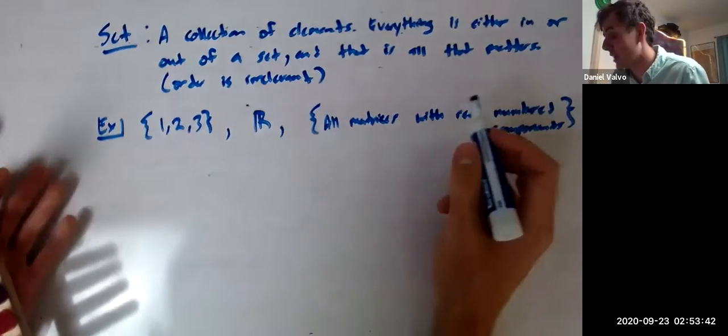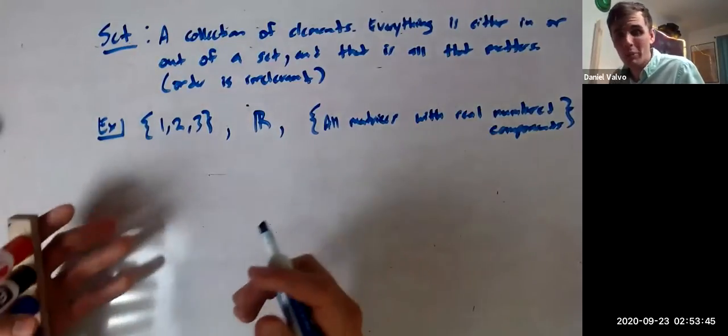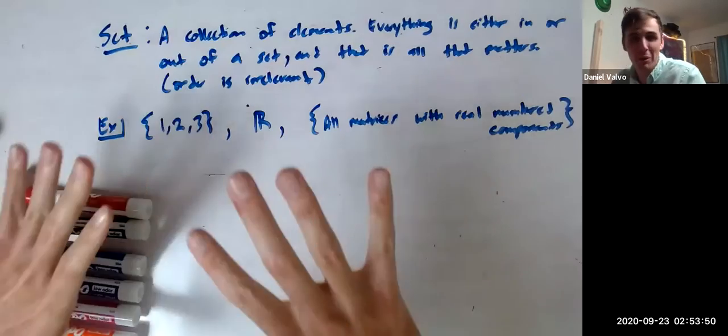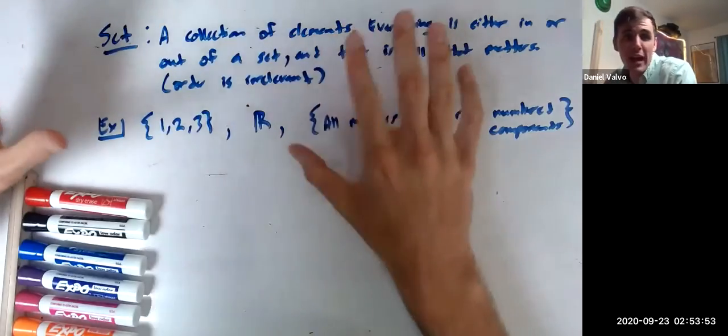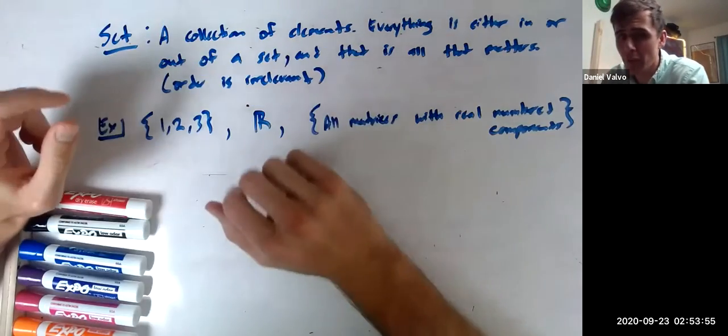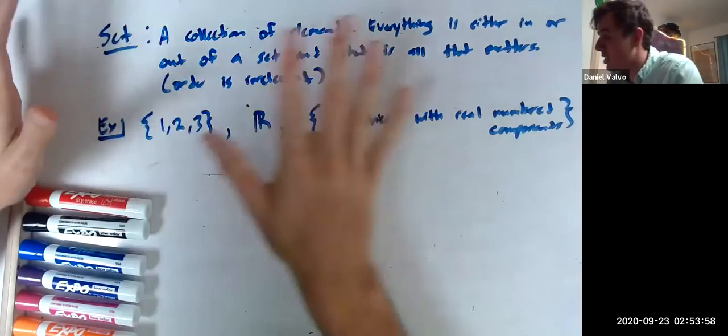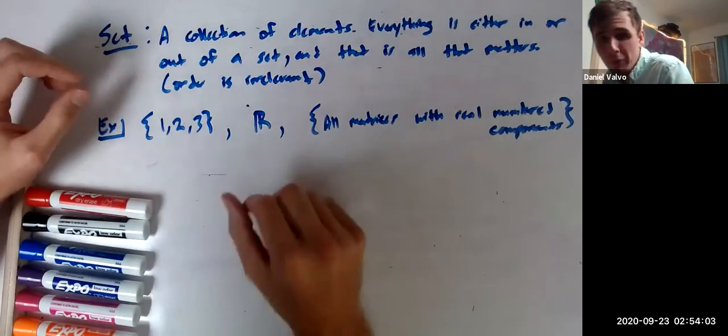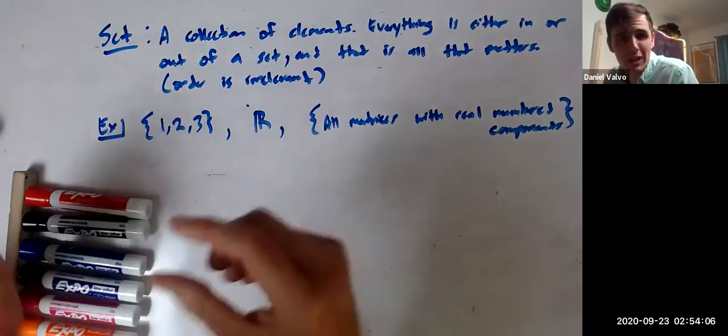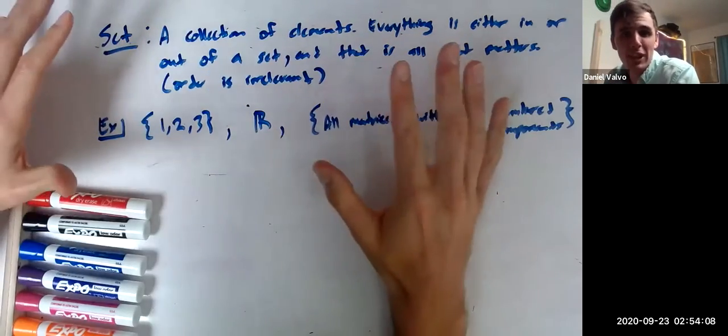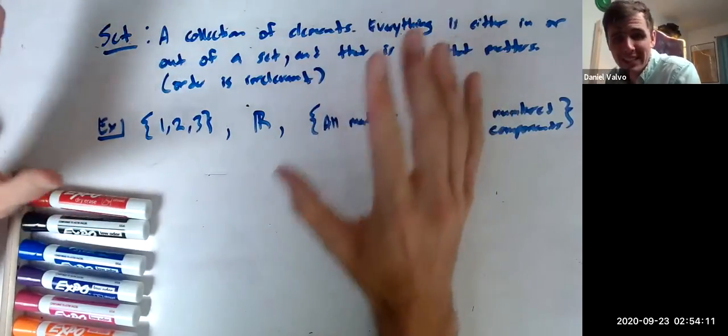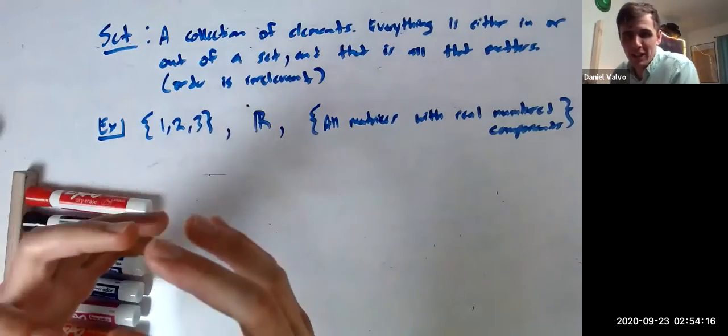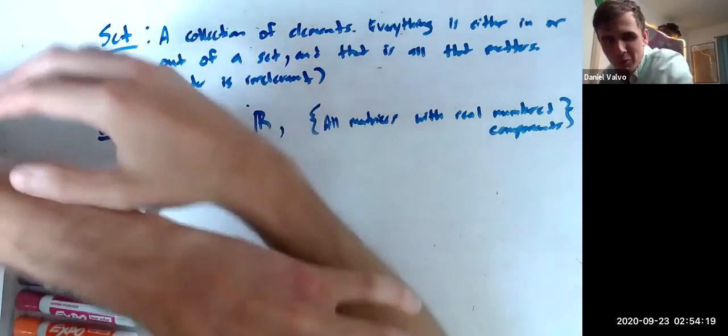Now, what I mean by everything is either in or out of a set, and that's all that matters. What I mean by that is a set, you can think of it as kind of like, imagine, this is going to be weird. Imagine everything. Like literally everything. Imagine every single goat, every single planet, every single number, every single matrix, every single possible human being that could ever exist. Like every single thing in the real world, in the imaginary world, everything, right? Everything that we could possibly put a name to, right? A set is just a collection of those, or just picks out, these are the ones we care about. It's kind of kind of partitions those and goes, these are ours. These are the ones we all care about.